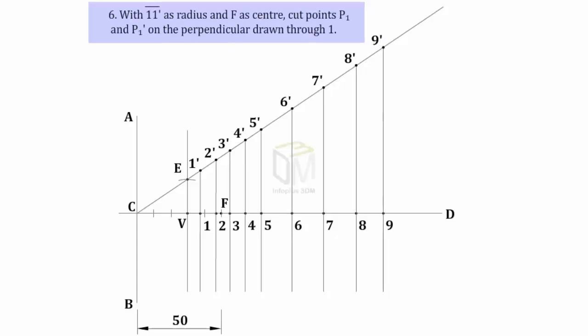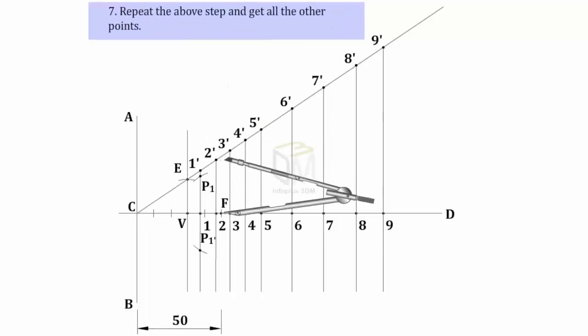Now, with 1, 1 dash as radius and F as center, cut points P1, P1 dash on the perpendicular line drawn through 1. Repeat the above step and get all the other points.